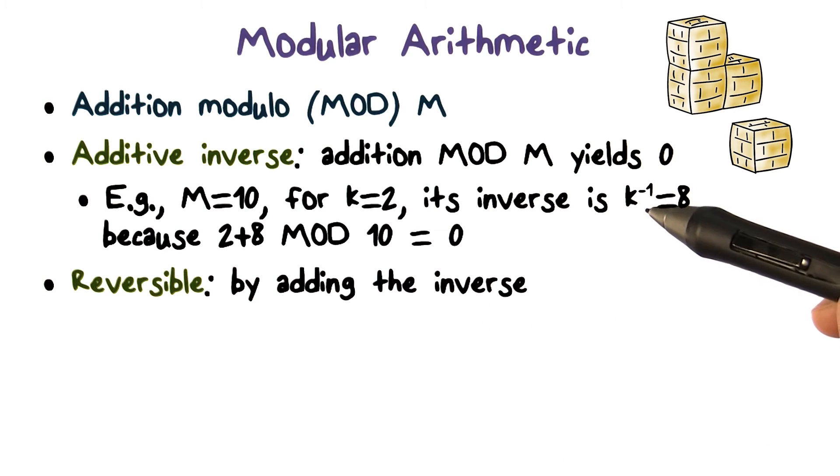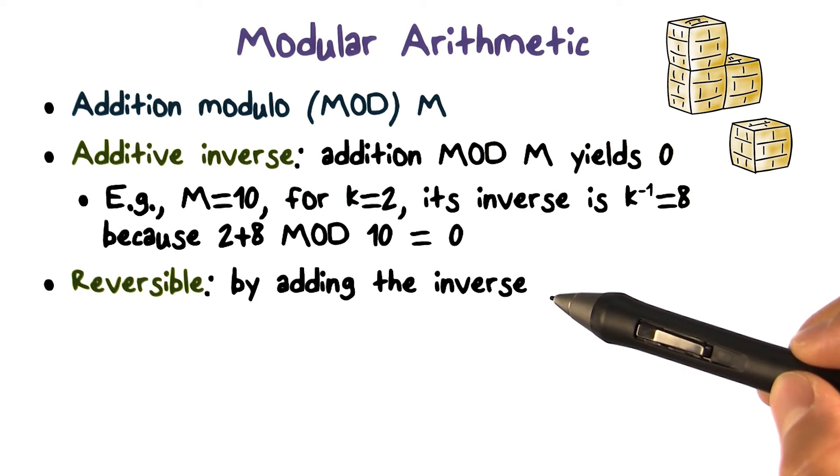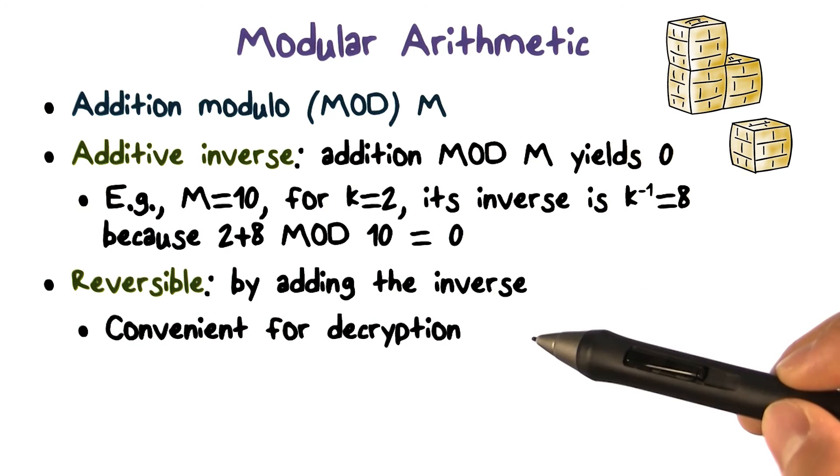Having an additive inverse means that modular addition is reversible. By adding the inverse, we can reverse the result of modular addition. This is very convenient for encryption and decryption, because we want the encryption process to be reversible. Ideally, the decryption process is just the reverse of the encryption process.